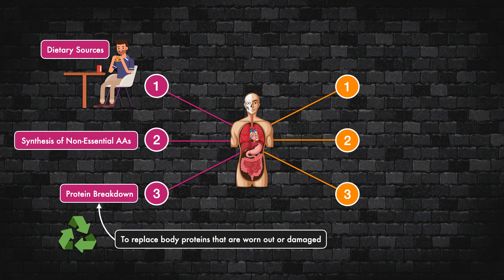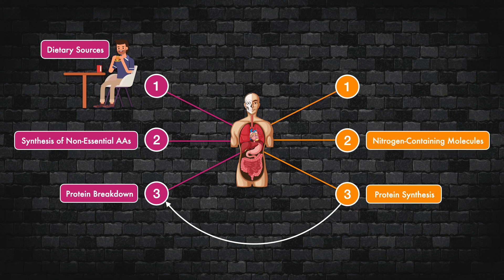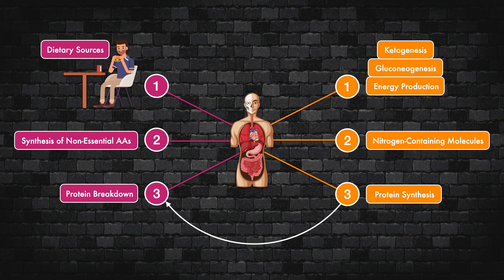For the sources that deplete the amino acid pool, we have the greatest amount going to protein synthesis, which runs counter to protein breakdown by creating new ones. Then we have amino acids going to the production of nitrogen-containing molecules like neurotransmitters, DNA and RNA, nitric oxide, creatine, and heme. Last but not least, we have amino acids that are used as substrate for energy production, gluconeogenesis, and/or ketogenesis.